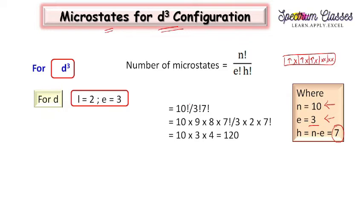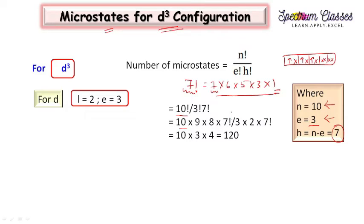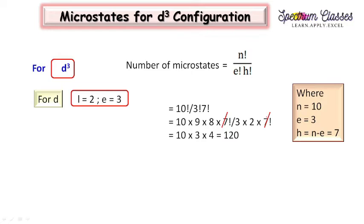Now putting all these values in the formula: 10 factorial over 3 factorial times 7 factorial. I can write 10 factorial as 10 × 9 × 8 × 7!, and since 7 factorial appears in the denominator it cancels. Opening 3 factorial gives 3 × 2 × 1. On solving this we get 120 microstates for this d³ configuration.